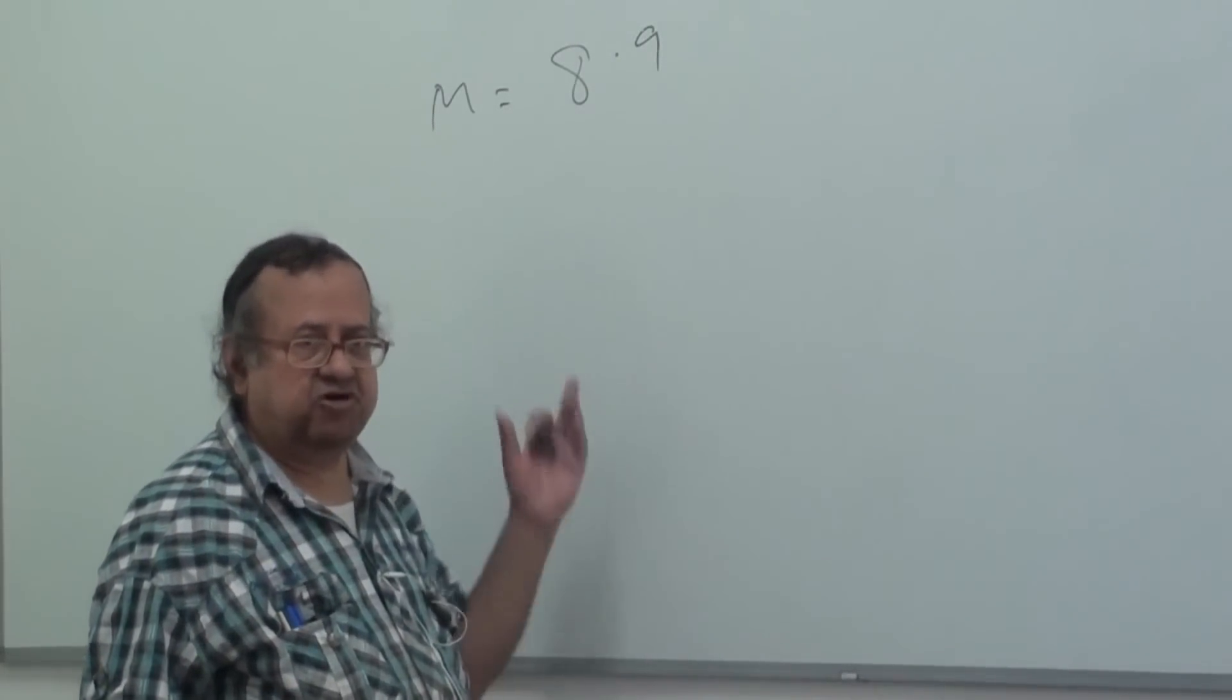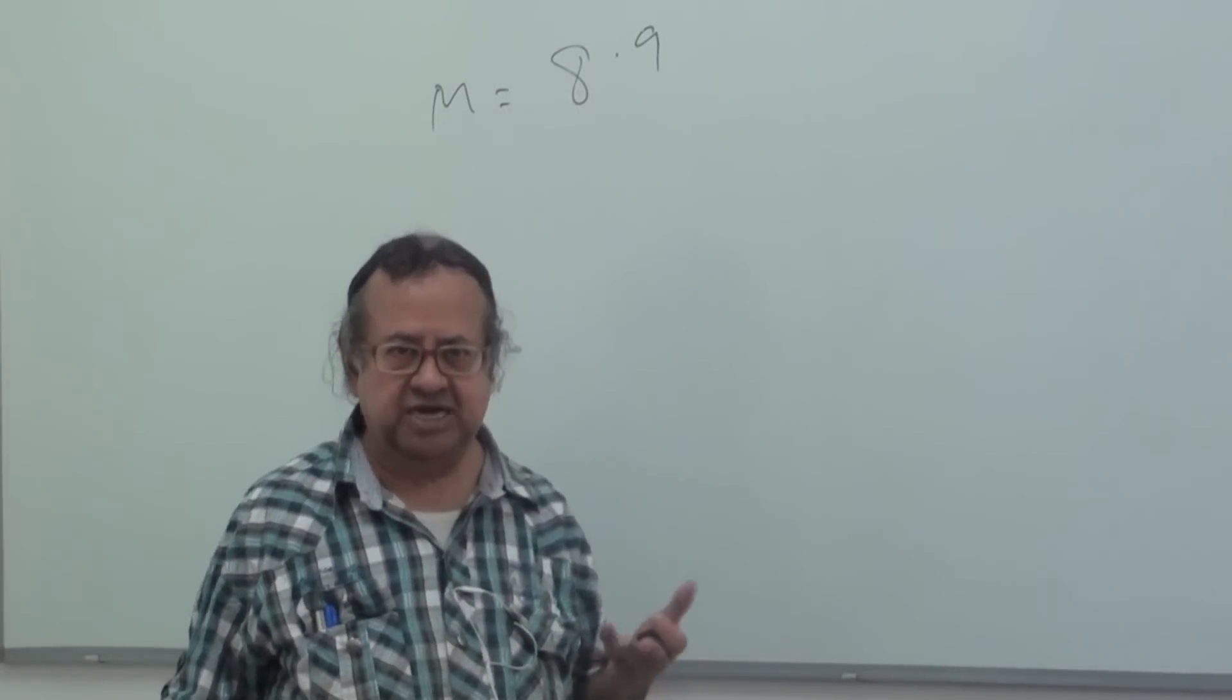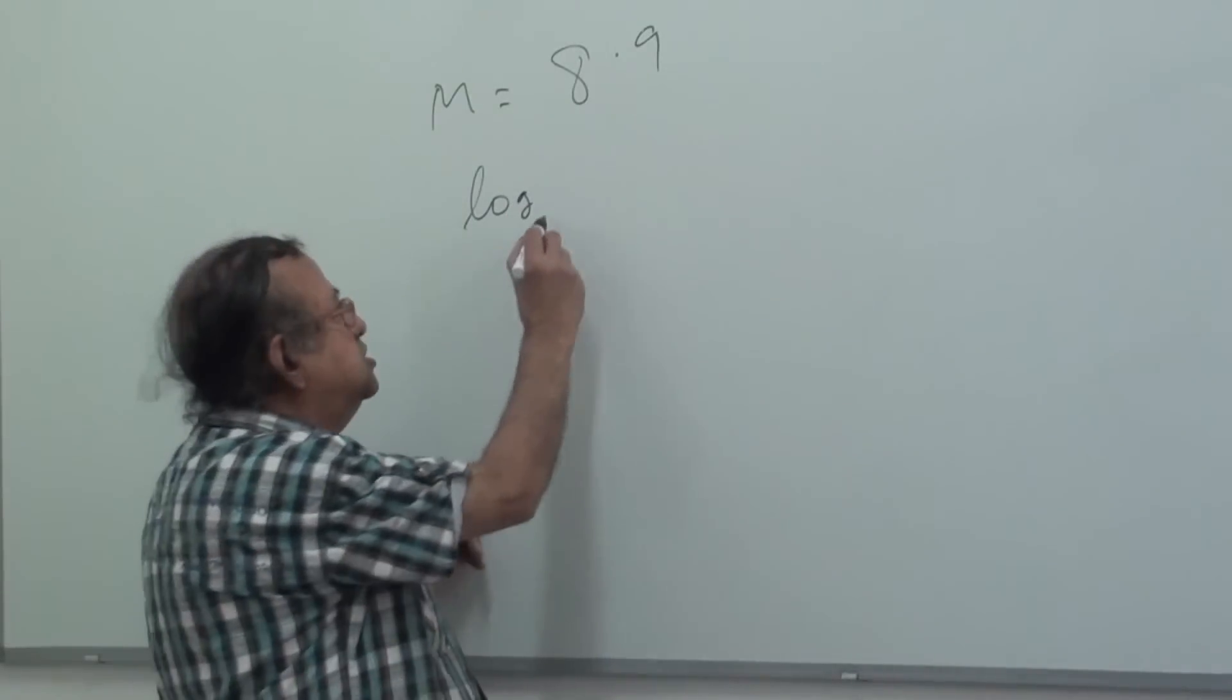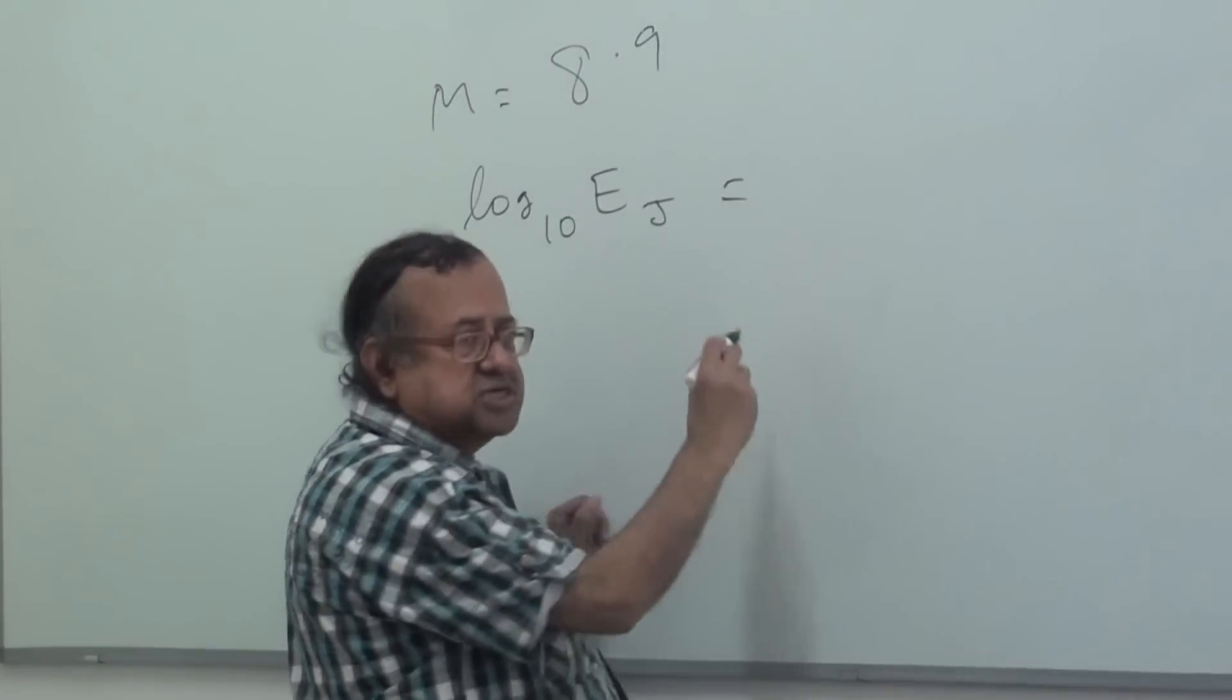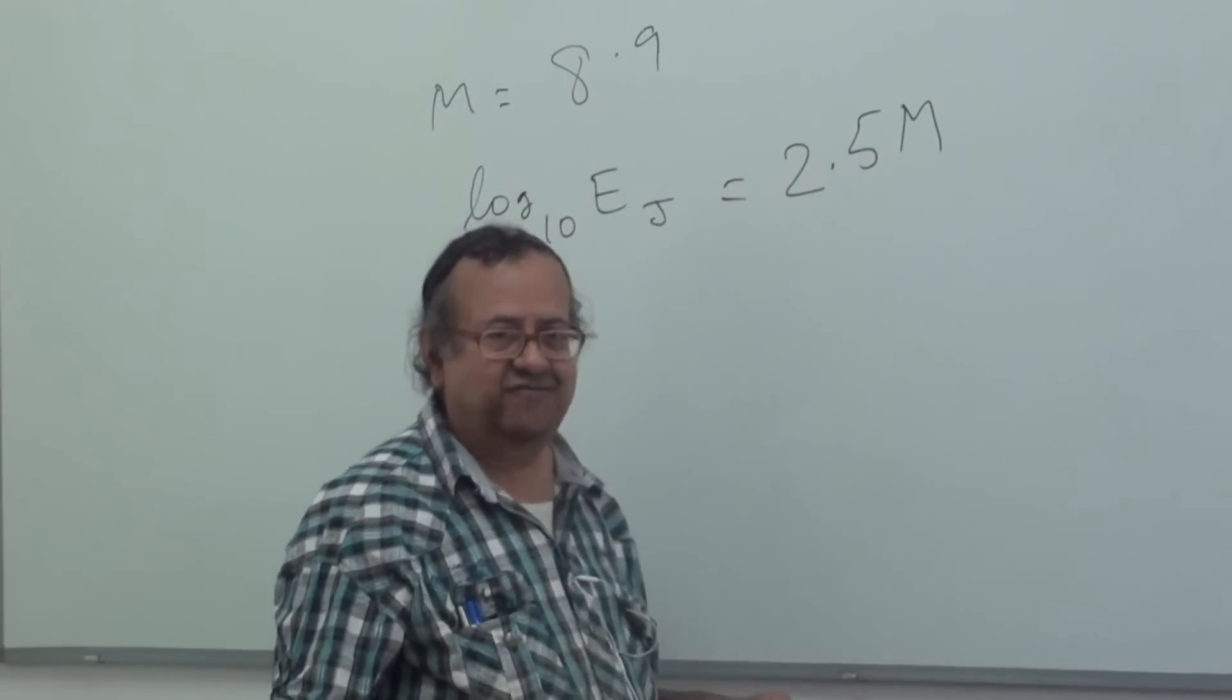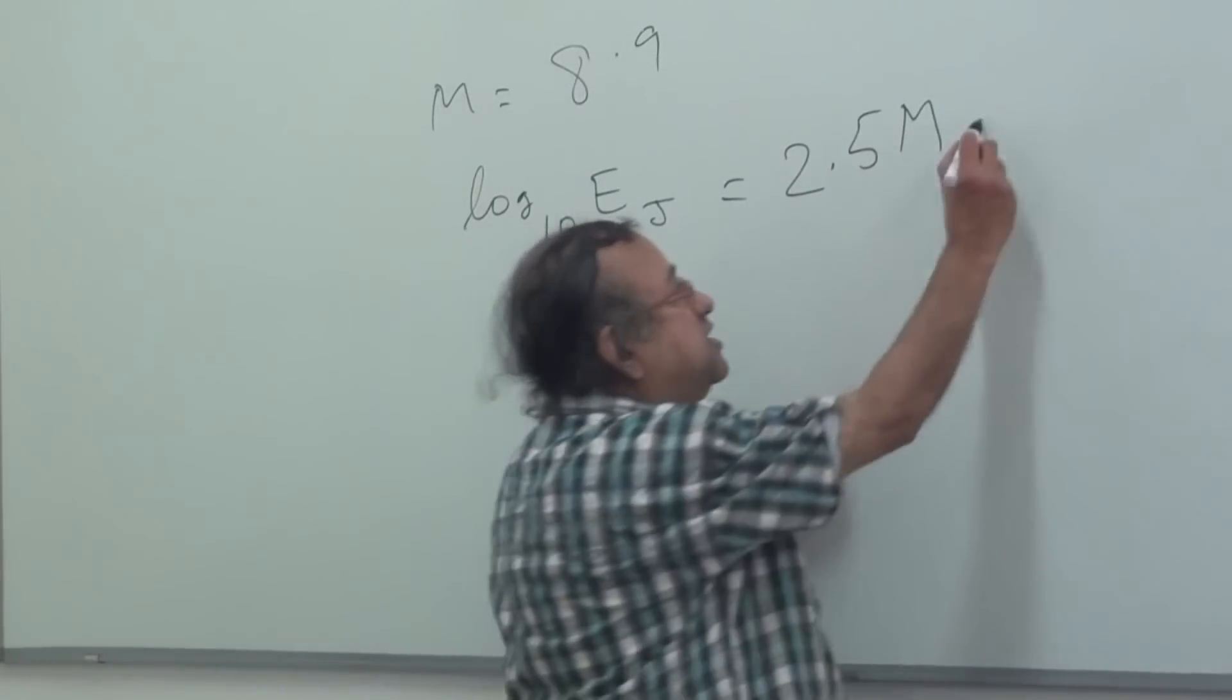So the formula they tend to use is for suppose you know a magnitude Richter 8.9 or 8 or whatever, or 6 or whatever, what is the energy released? How they estimate the energy released? So this is the formula they use normally. This log base 10 E in joules is given by 2.5M, M is the magnitude. So this is 8.9. And they put a minus 1.2.